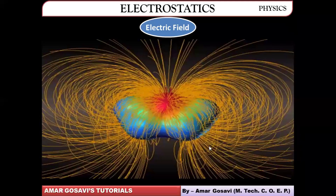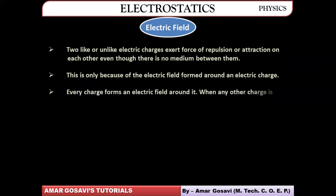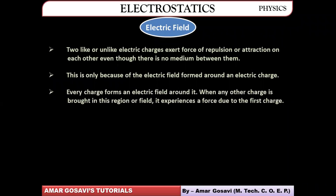When we talk about electric field, we know like charges repel and unlike charges attract, even if there is no medium between them. This happens because of the electric field formed around an electric charge. Every charge forms an electric field around it, and when another charge is brought into that field, it experiences a force — either of repulsion or attraction — due to the electric field of the first charge.